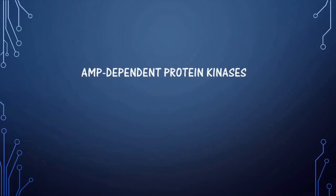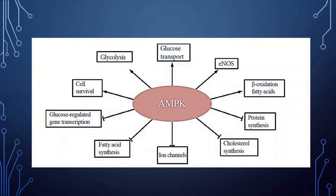Next is AMP-dependent protein kinase. AMP kinase activates cell survival, glycolysis, glucose transport, eNOS, nitric oxide synthase, beta-oxidation, and fatty acid synthesis. It inhibits protein synthesis, cholesterol synthesis, ion channels, fatty acid synthesis, and glucose-regulated gene transcription.